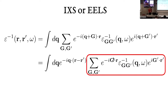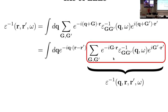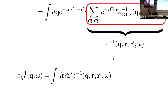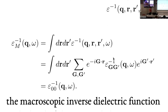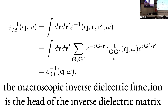By doing our double integral in r and r prime divided by the volume, we obtain that the G equal G prime equal zero component is the macroscopic quantity. This is called the macroscopic inverse dielectric function, which is the head of the matrix — the first component of the matrix.